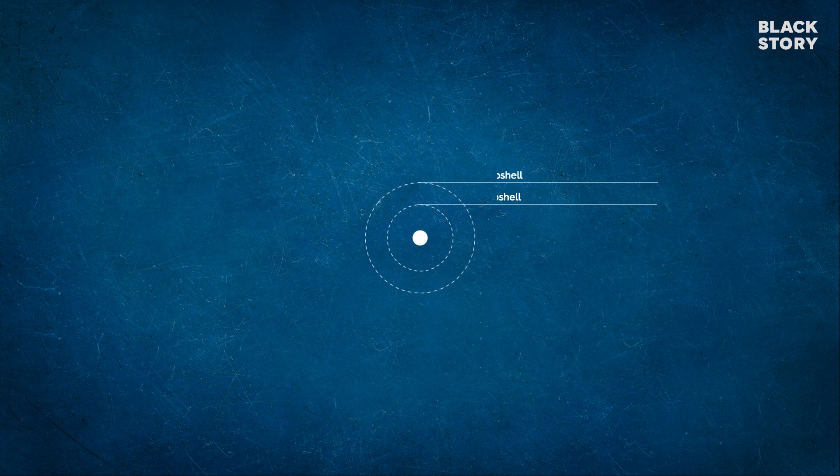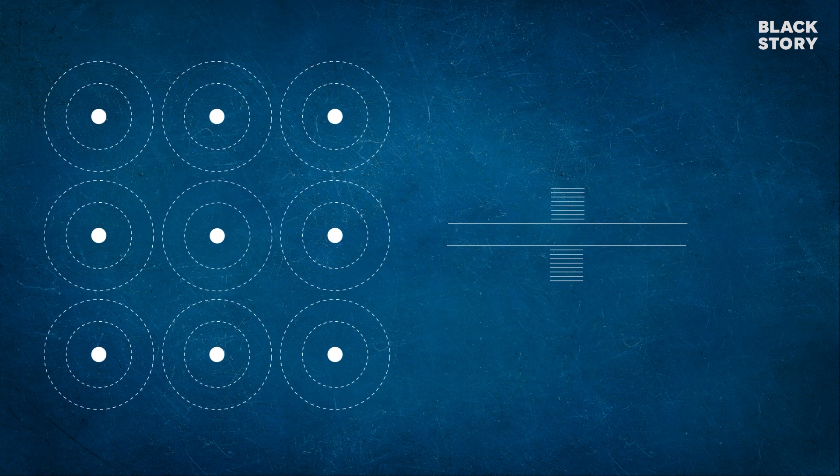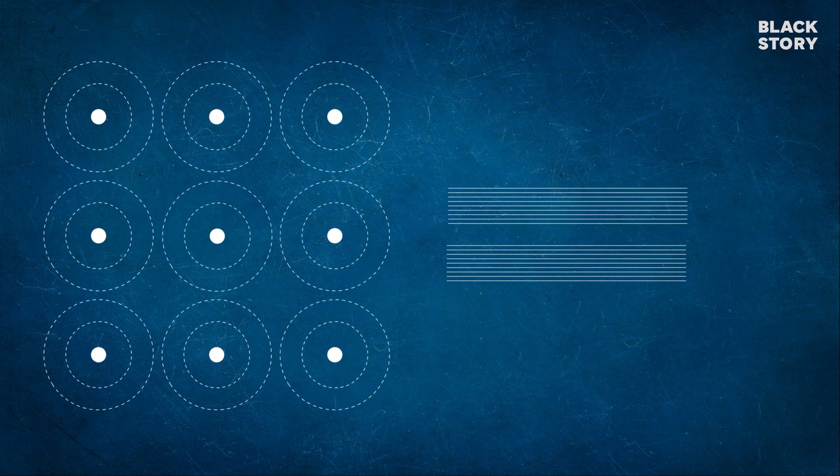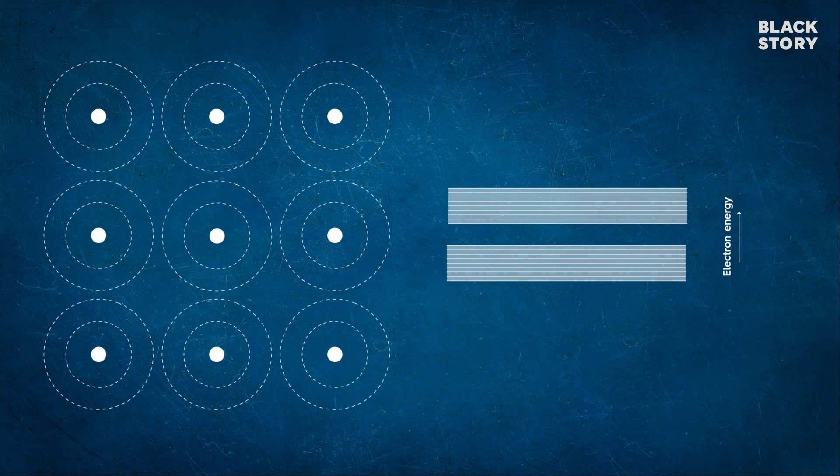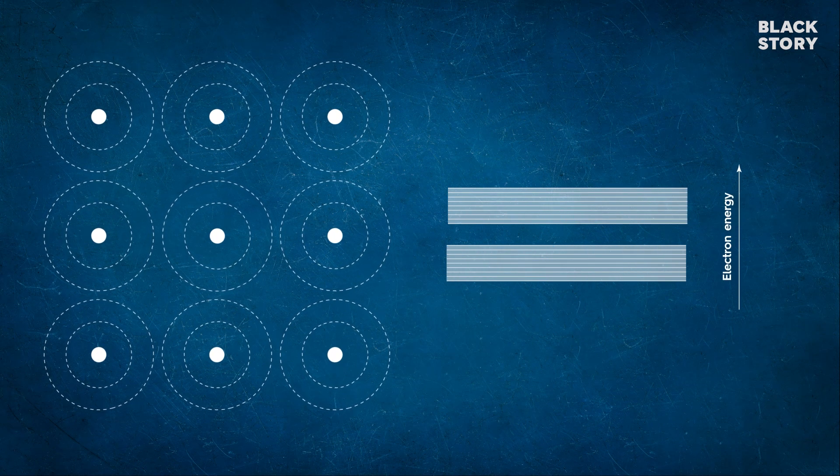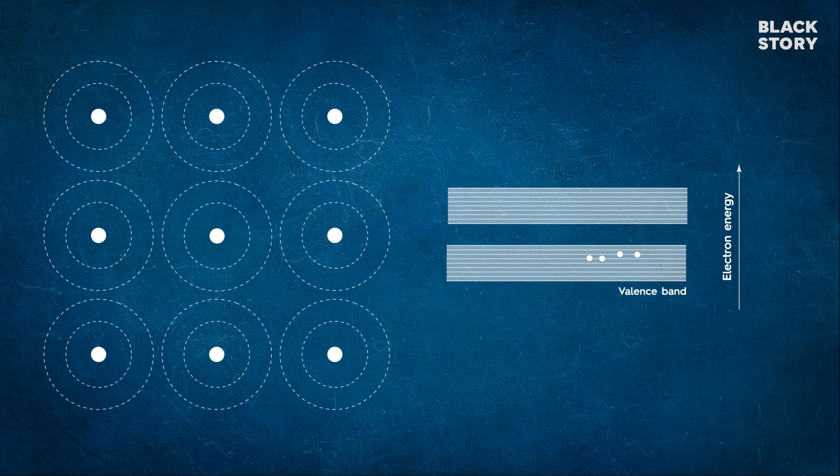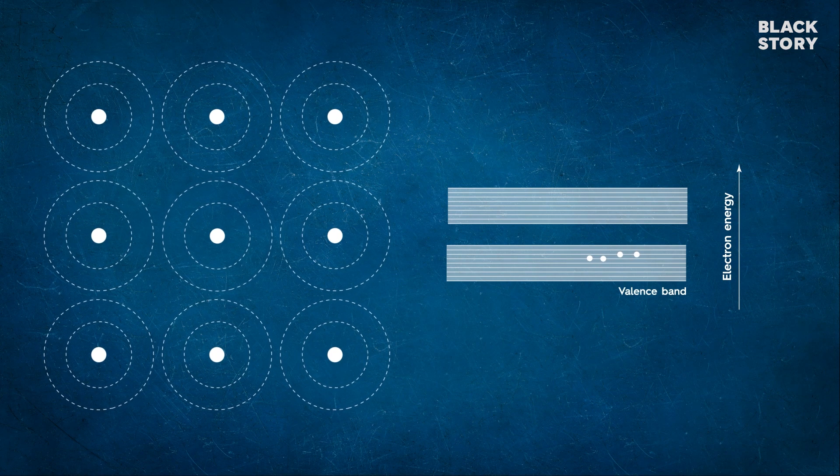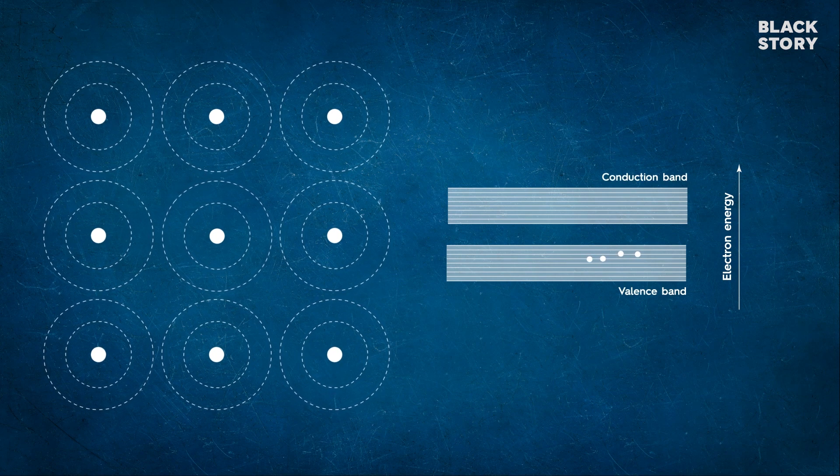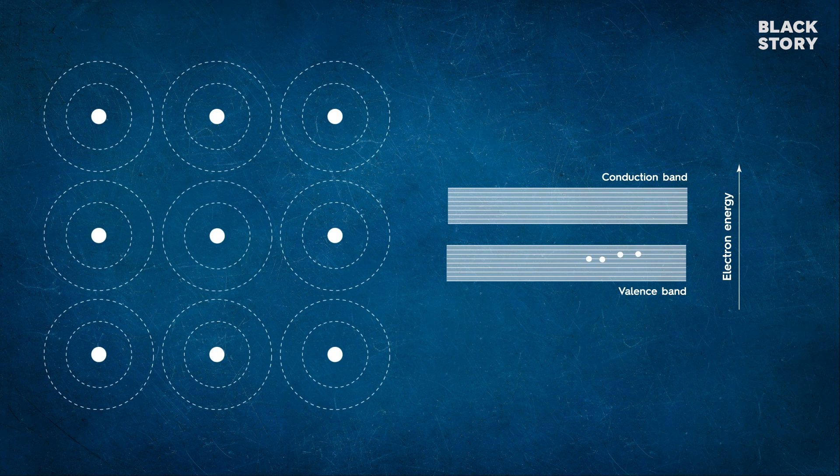When atoms come together to form solids, electrons in the outer orbit overlap with nearby atoms to form energy bands with continuous energy variation. The energy band which includes the outer shell electrons or valence electrons is called the valence band. The energy band above the valence band is called the conduction band.